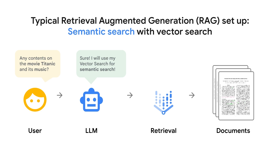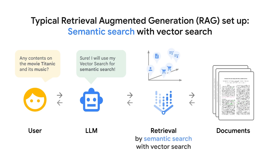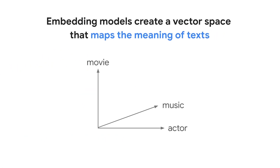When it comes to retrieval, Vector Search or Vector Databases are the popular choices because of their semantic search capability. Let's quickly recap how semantic search with Vector Search works. Embedding models create a vector space that maps the meaning of texts.